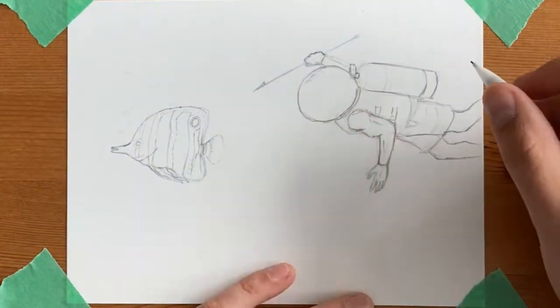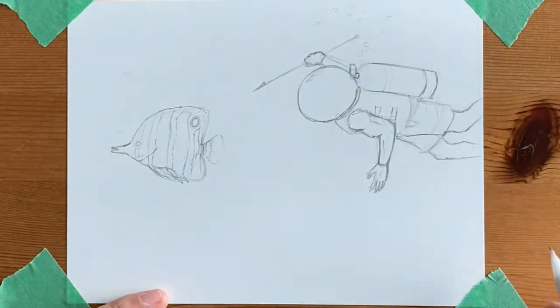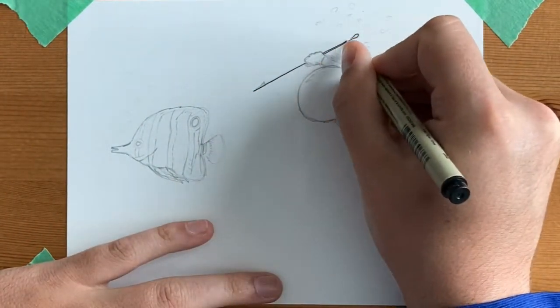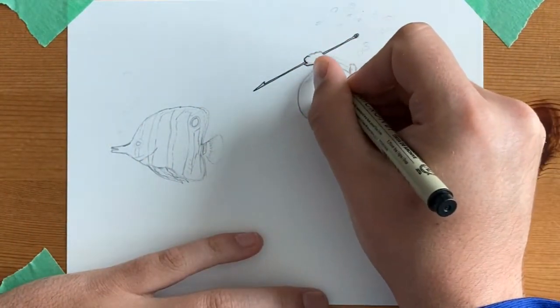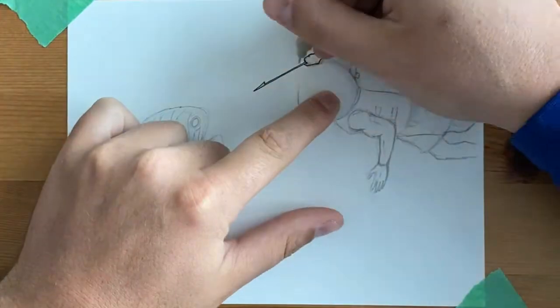As we go here, we're starting with just the penciling work, laying out the rough shapes of the scuba guy here and also this really cool colorful fish that I found a picture of online.